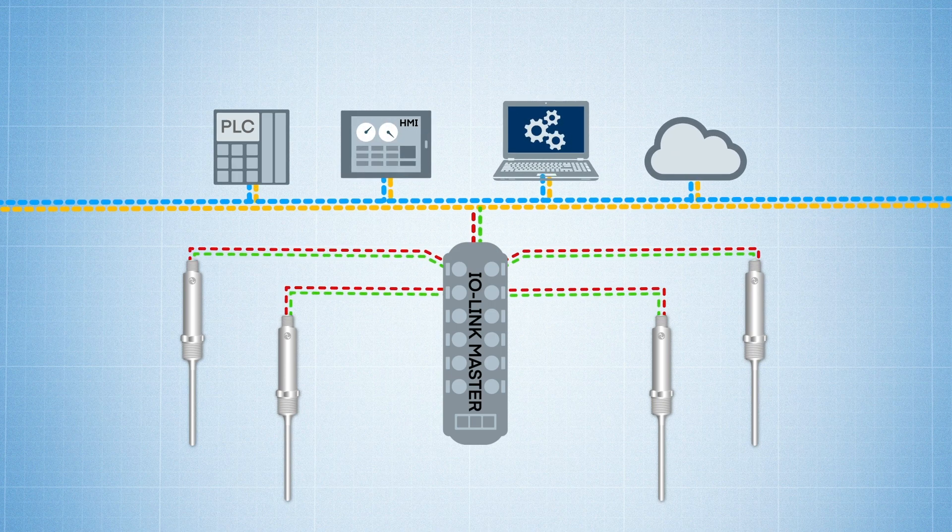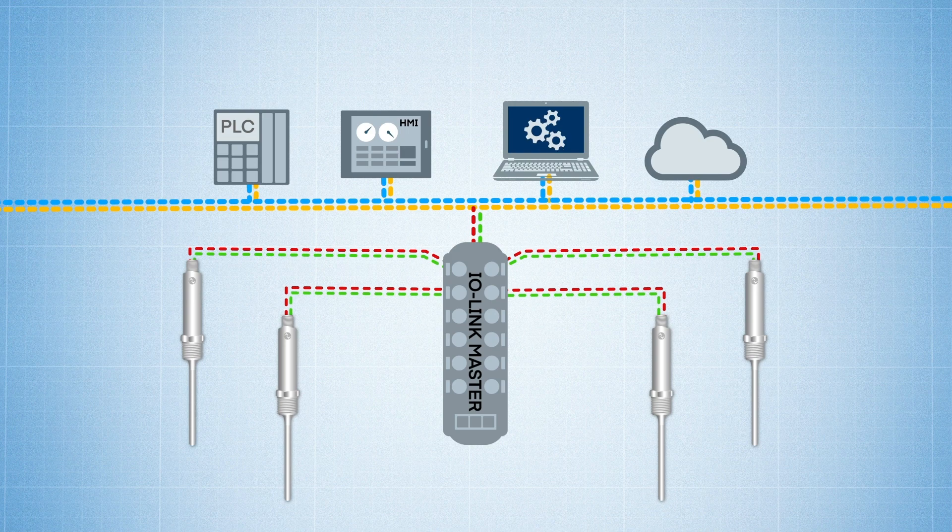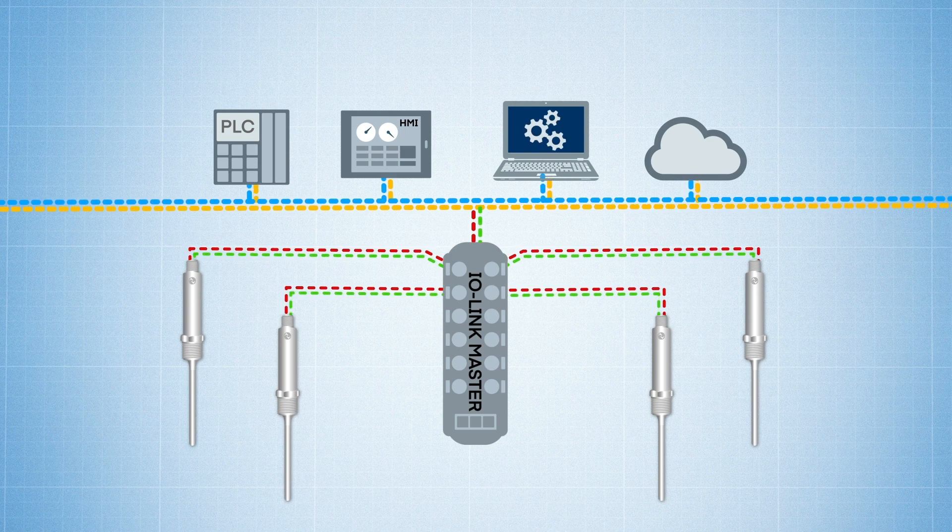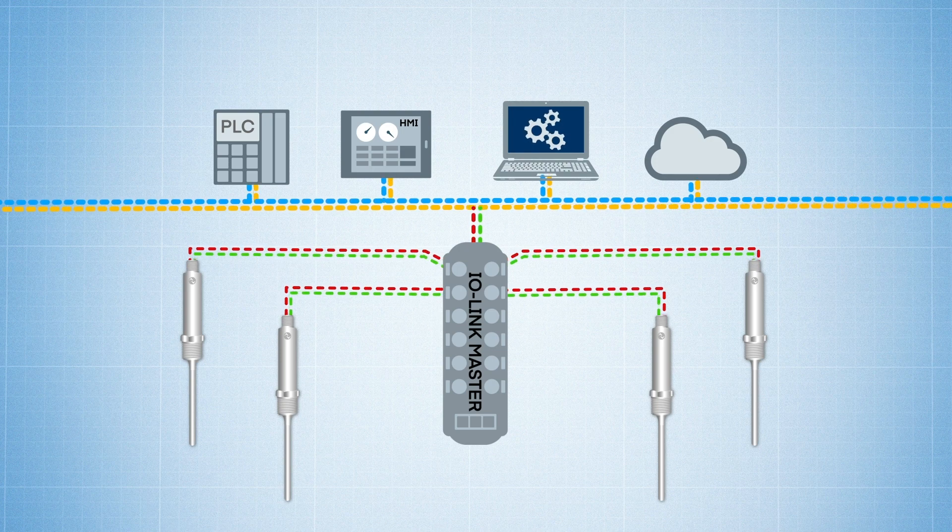And because IO-Link has bi-directional, point-to-point, digital signal capabilities, many device parameters can be adjusted from the PLC without having to physically go to the sensors in the field.